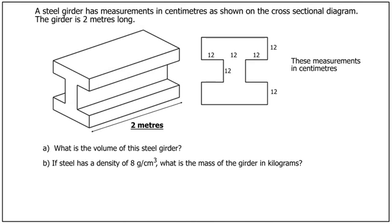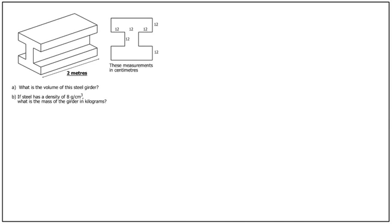Let's move this information to the top of the diagram to give us room for our working. Firstly, you'll recognise that this shape is a prism because its cross-section is the same all the way through the girder. You'll remember that the volume of a prism is the area of the end multiplied by the length. The first thing we have to do therefore is to find the area of the end, and in this case we split the cross-section into three rectangles.